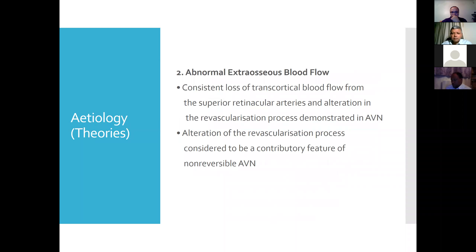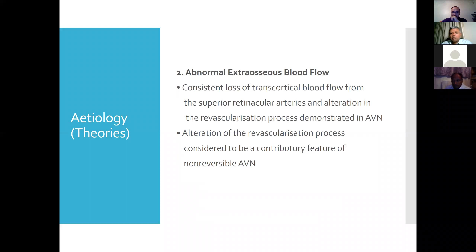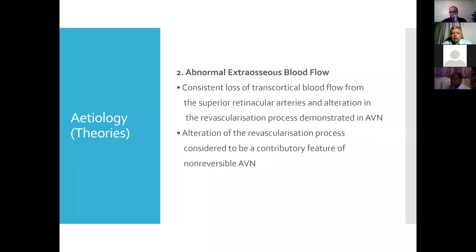The next theory is abnormal extra-osseous blood flow — note, extra-osseous. If you've got consistent loss of trans-cortical blood flow, and this is related to the femoral head — that's why it references the superior retinacular arteries — and alteration in the revascularization process, that's demonstrated in AVN patients. Alteration of the revascularization process is considered a contributory feature of non-reversible AVN. These are all observations from experiments. The AVN that is not getting reversed — they have found this particular process happening.